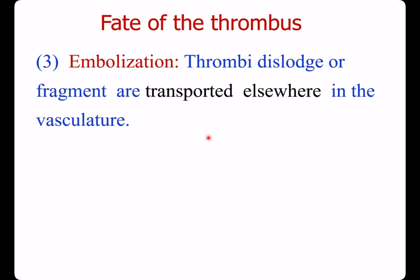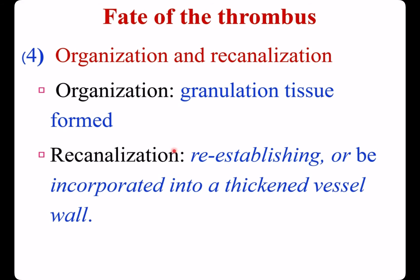Third, embolization: thrombus or its fragments are dislodged and transported elsewhere in the vasculature. Fourth, organization and recanalization. Organization involves thrombus-induced inflammation, fibrosis, and formation of granulation tissue. Recanalization: the organized thrombus can eventually re-establish some degree of flow, or be incorporated into a thickened vessel wall, maintaining the continuity of the original lumen.